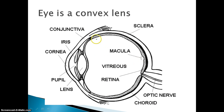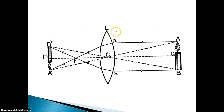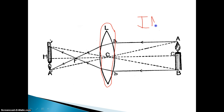Why does that happen? Well, because the eye is a convex lens. Here we have the lens of the eye that I'm circling in red — that is a convex lens. A convex lens is thicker in the middle and thinner on the outside. Here we have a convex lens labeled L. On this side, things are coming into your eye, and on this side is the inside of your eye.